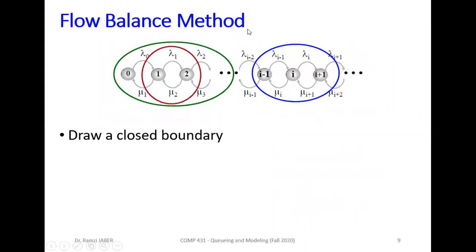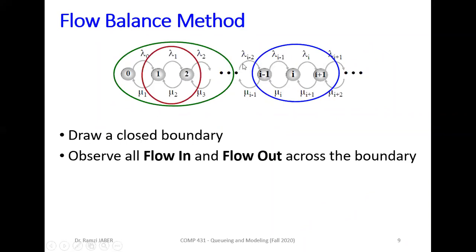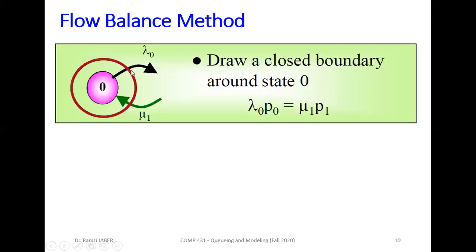Now, the flow balance method. Draw a closed boundary at anywhere. Observe all flow in and the flow out across the boundary. Given that, the equation to be balanced must be flow out equal to flow in. Example, at node 0, we have only two flows. Lambda_0 out, mu_1 in. So by equation, the probability lambda_0, probability of 0, equals mu_1 probability of 1. Lambda_0 P_0 equals mu_1 P_1.